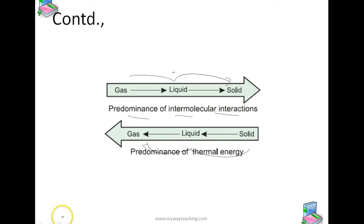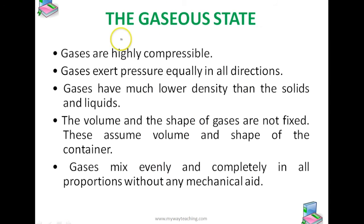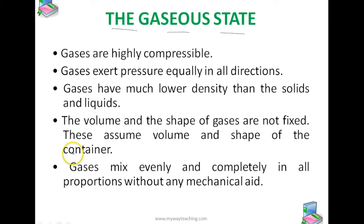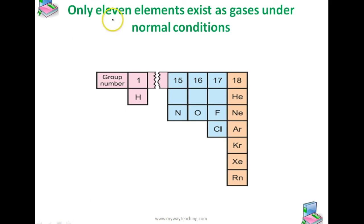Next, the gaseous state is the simplest state of matter. Looking at the periodic table, only 11 elements exist as gases under normal conditions.